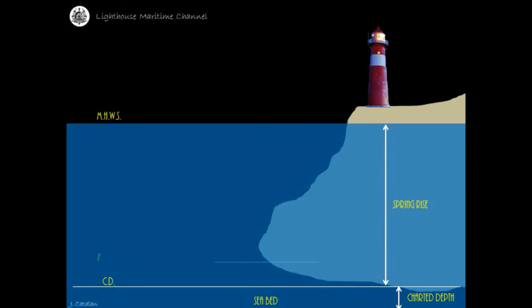Mean low water spring is the average level of the low waters that occur at the times of spring tides. Spring range is measured from the mean low water spring to the mean high water spring.